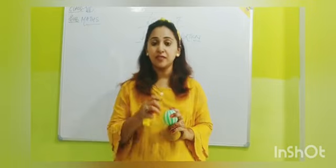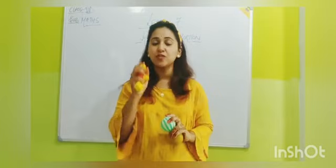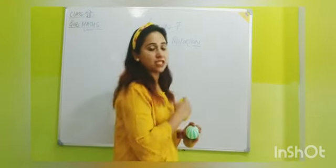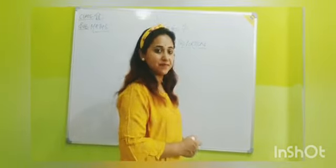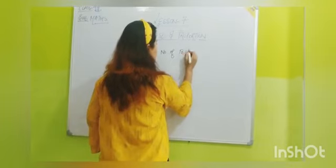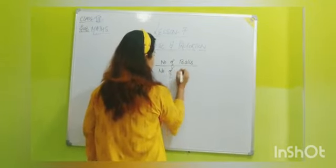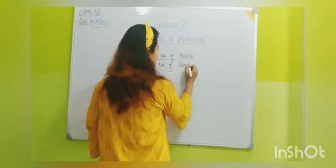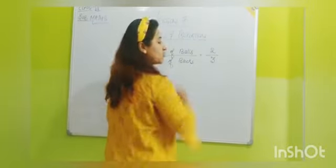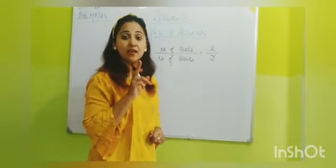Another way of telling ratio is number of balls to the number of blocks. So how you can write on the board? Look it carefully. So number of balls to the number of blocks. So number of balls we have two and number of blocks we have three. So this is known as ratio.